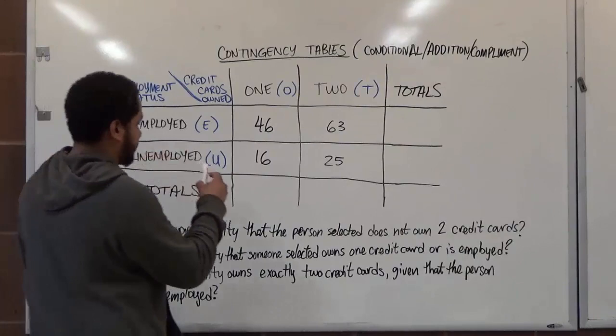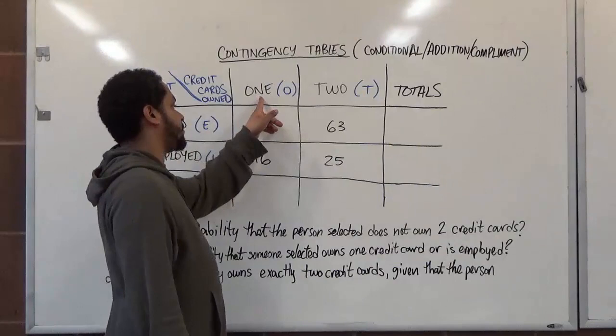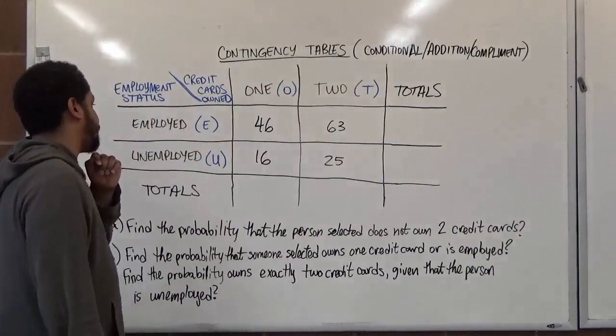I'll put those sums in red so we can identify them differently. We define our sets: E for employed people, U for unemployed people, O for people with one credit card, and T for people with two credit cards.